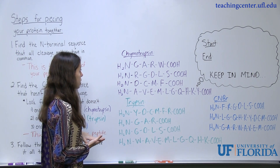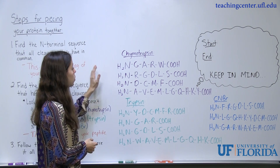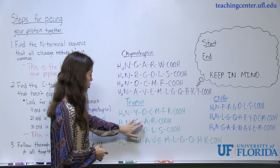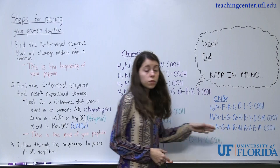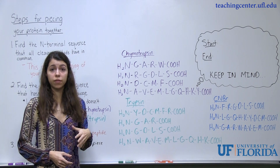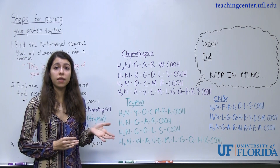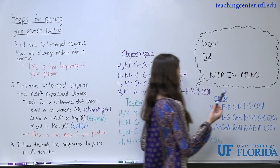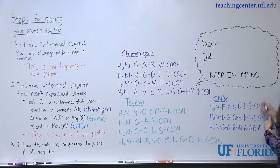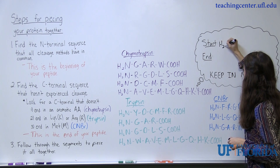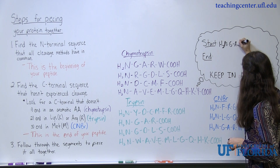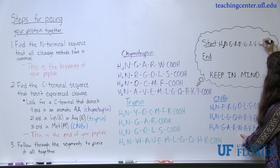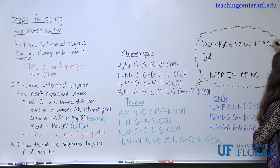If we look here, we notice that for chymotrypsin, trypsin, and cyanogen bromide, we all have GARW in common — here it's GARW, here it's GAR, and here it's GAR. Since they all share that beginning amino acid sequence in common, that's going to be the start of your polypeptide. We can look at the one with the longest chain and follow it through. So the start is going to be GARW, A, V, E, M, and then your carboxy terminal.